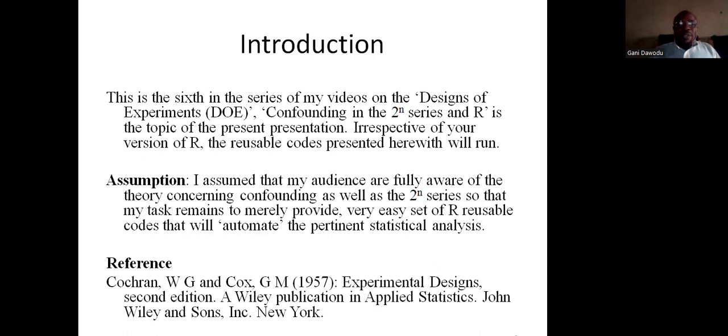My assumption is that you are fully aware of the 2N series and you know a lot about confounding. If that's the case, then my task is to provide you with R reusable codes that will automate the statistical analysis. The reference material remains Cochran and Cox, 1957.